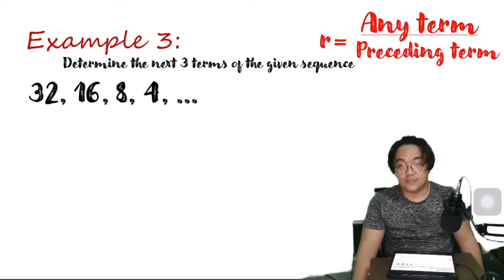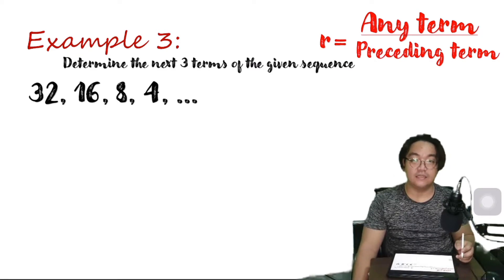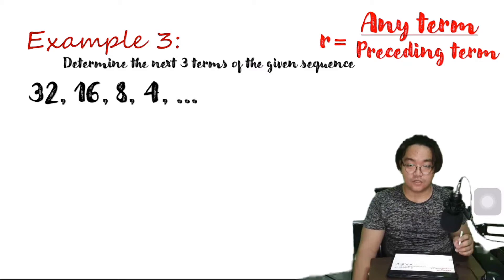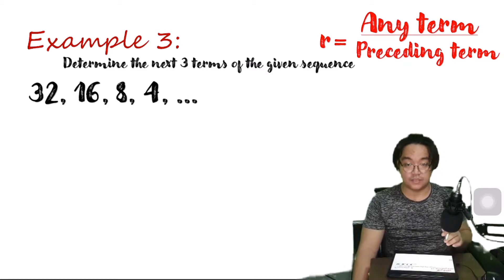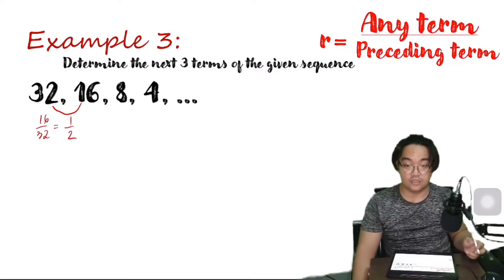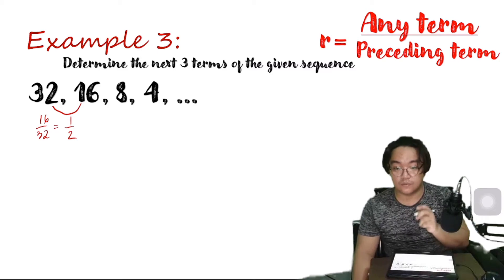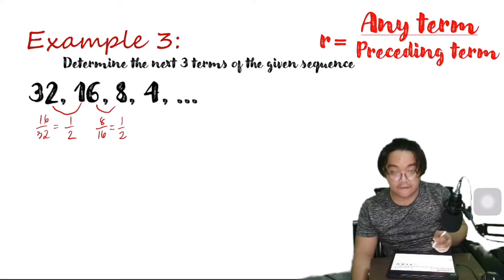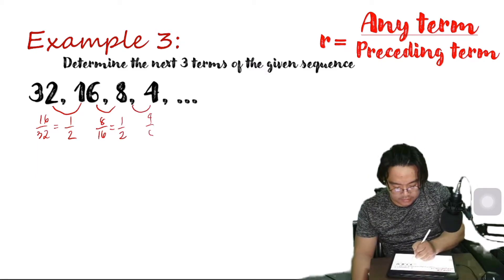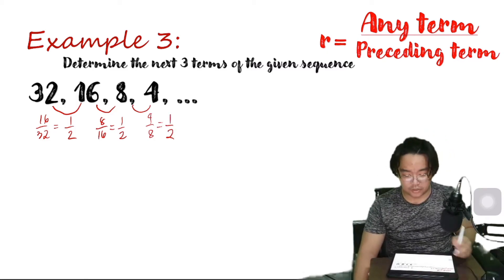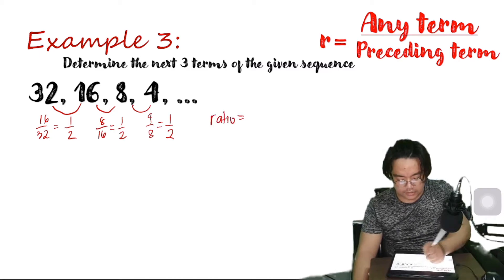Determine the next 3 terms of the given sequence: 32, 16, 8, 4, and so on. To find the common ratio, all you have to do is divide any term by its preceding term. So we divide 16 by 32, and don't be afraid even though the result will be a fraction. 16 divided by 32 is 1 half. 8 divided by 16 is also 1 half. And 4 divided by 8 is also 1 half. Which means our common ratio is 1 half.